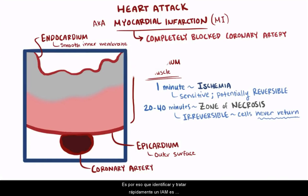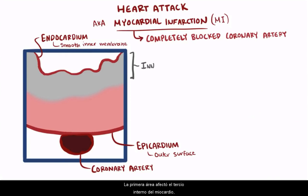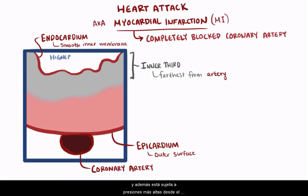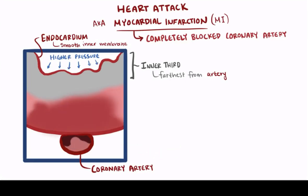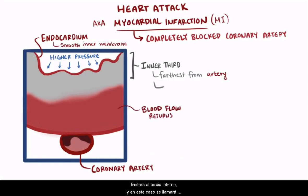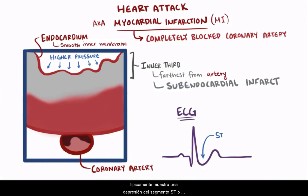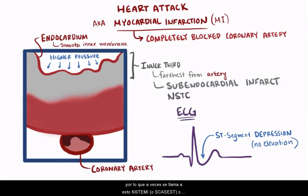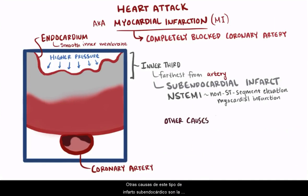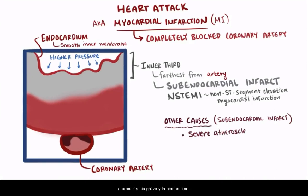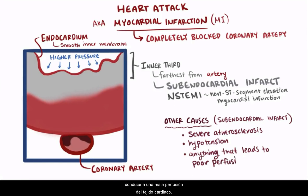That's why quickly identifying and treating an MI is super important. The first area affected is the inner third of the myocardium, since it's the farthest from the coronary artery, the last area to receive blood, and subject to higher pressures from the inside of the heart. If the blockage suddenly lyses or breaks down and blood flow returns, sometimes the patient's damage will be limited to the inner third — called a subendocardial infarct. Other causes of this sort of subendocardial infarct would be severe atherosclerosis and hypotension — anything that ultimately leads to poor perfusion of the heart tissue.